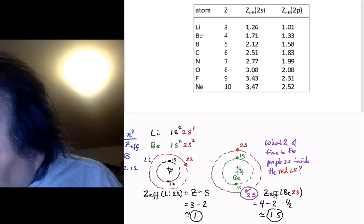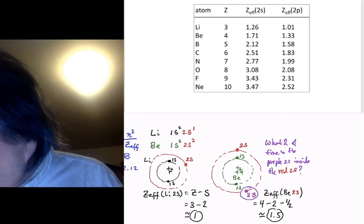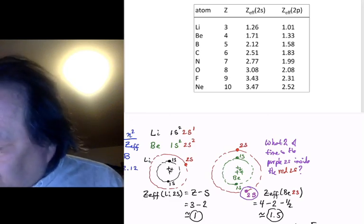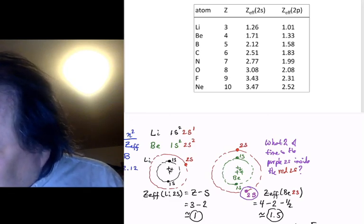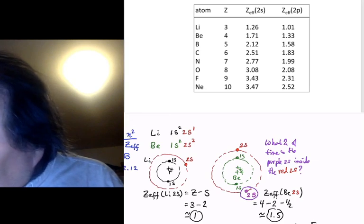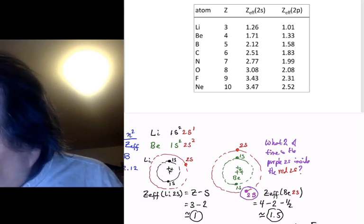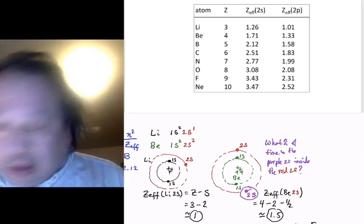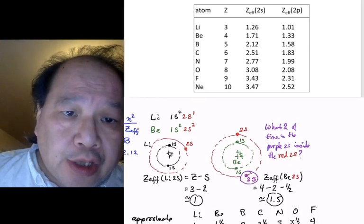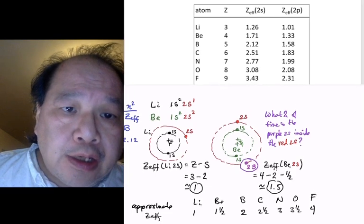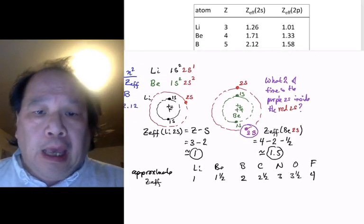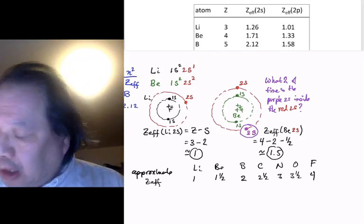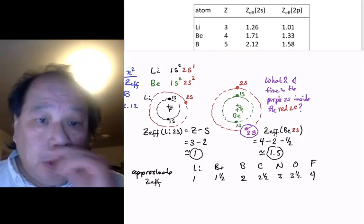You would end up with these approximate Z-effectives for lithium, beryllium, boron, carbon, nitrogen, oxygen, and fluorine of 1, 1.5, 2, 2.5, 3, 3.5, and 4. These are numbers that if you have looked at a lot of periodic trends, you may recognize.